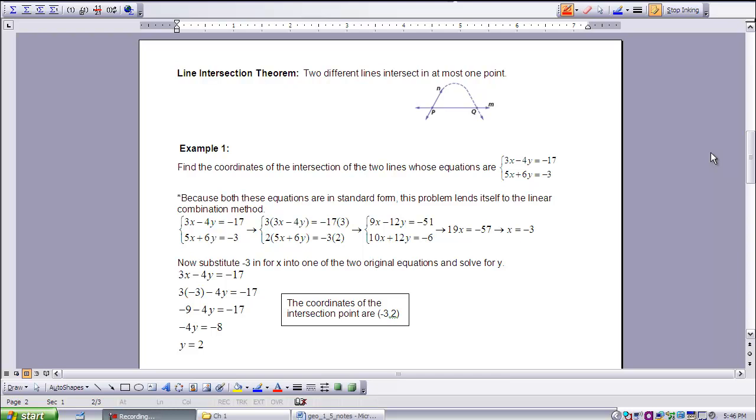We can show that two different lines cannot intersect at two different points. Suppose lines M and N intersect at point P. If there were another point Q where the lines intersected, then both M and N would pass through P and Q. However, the unique line assumption says that only one line can pass through points P and Q. So the two lines can intersect at only one point, which leads us to the line intersection theorem: two different lines intersect in at most one point.